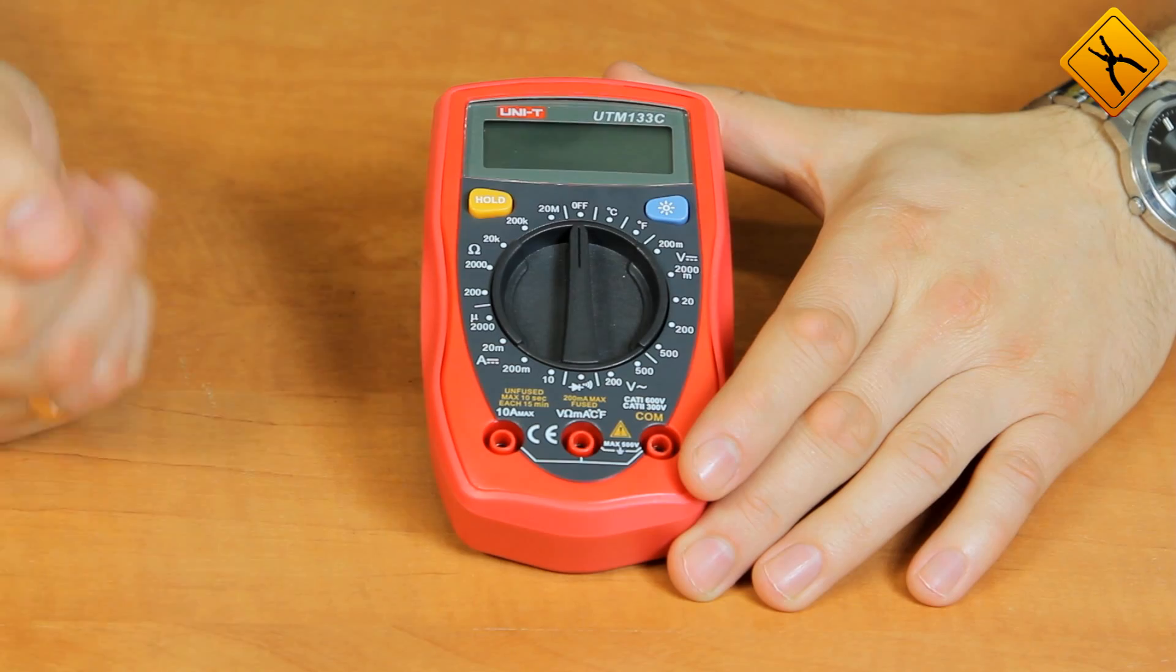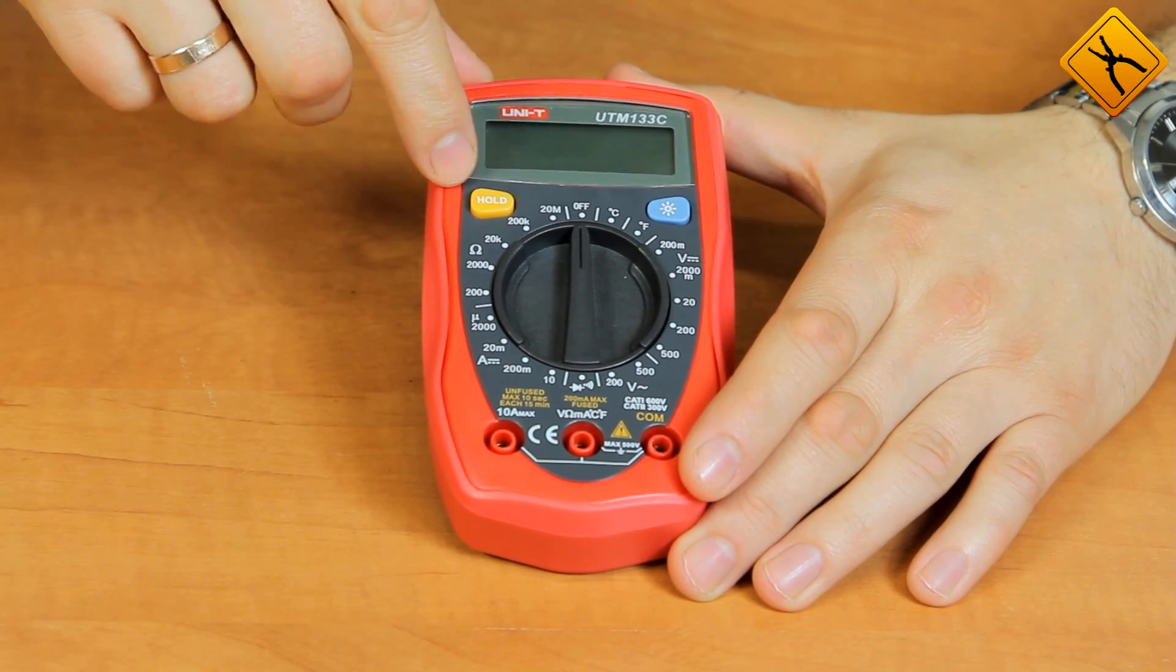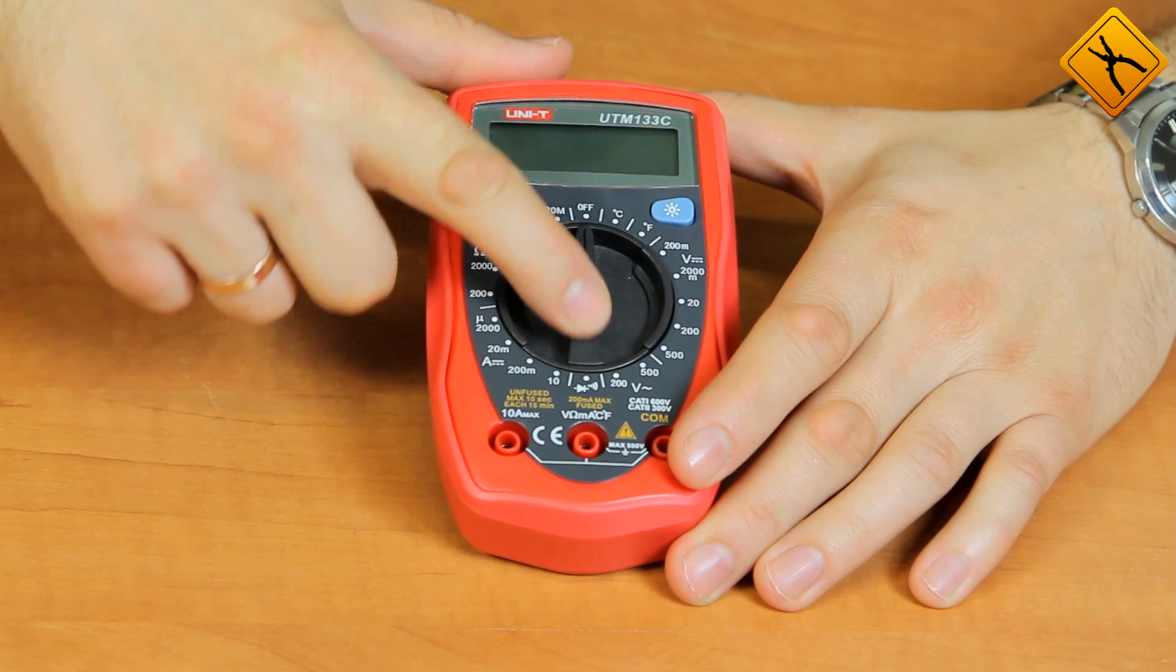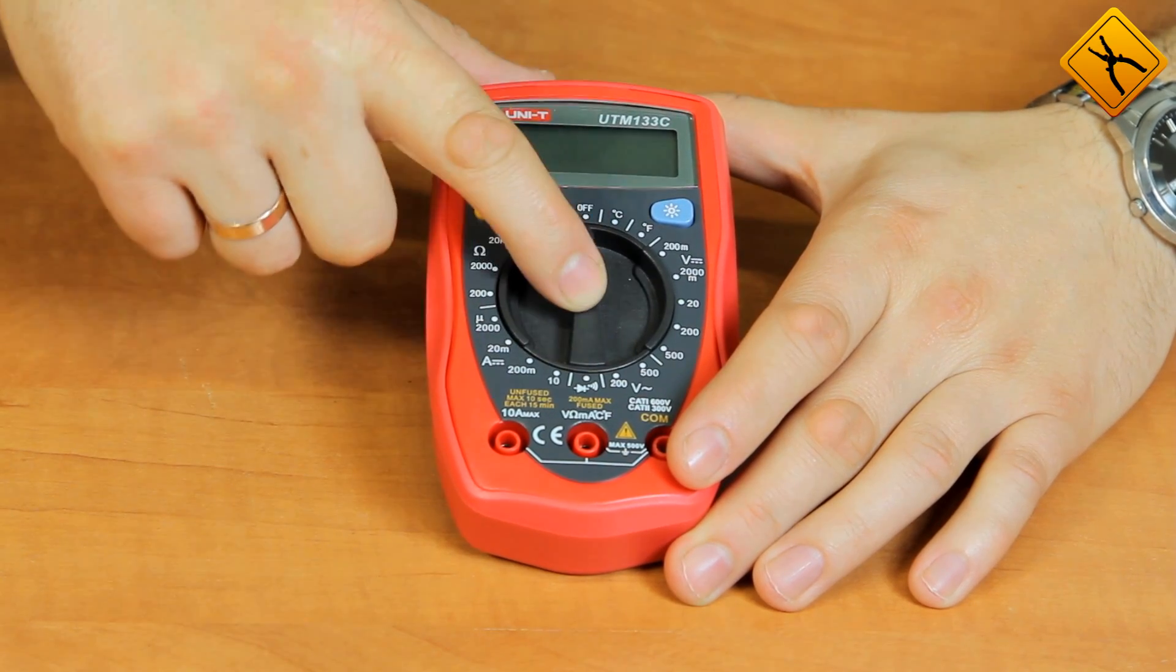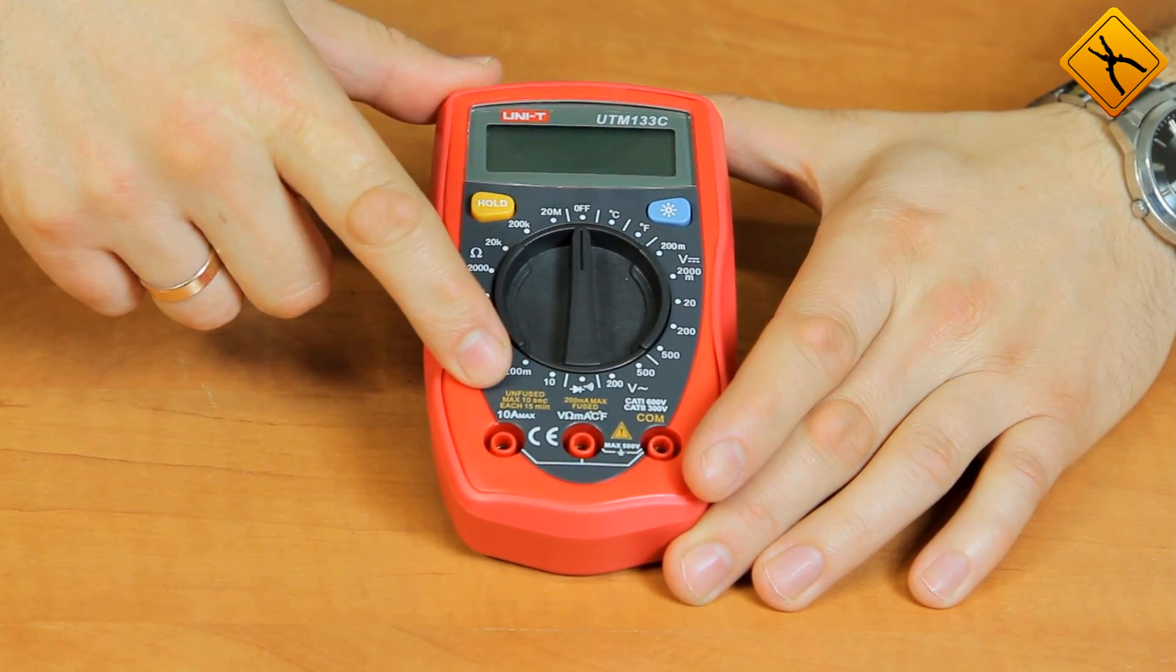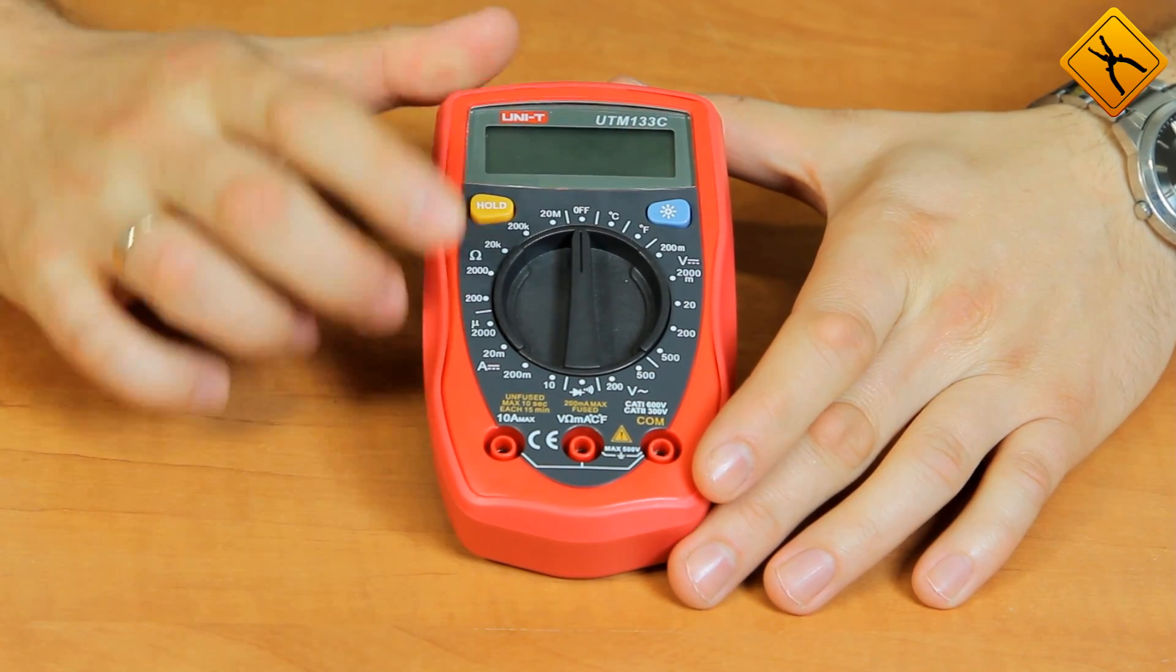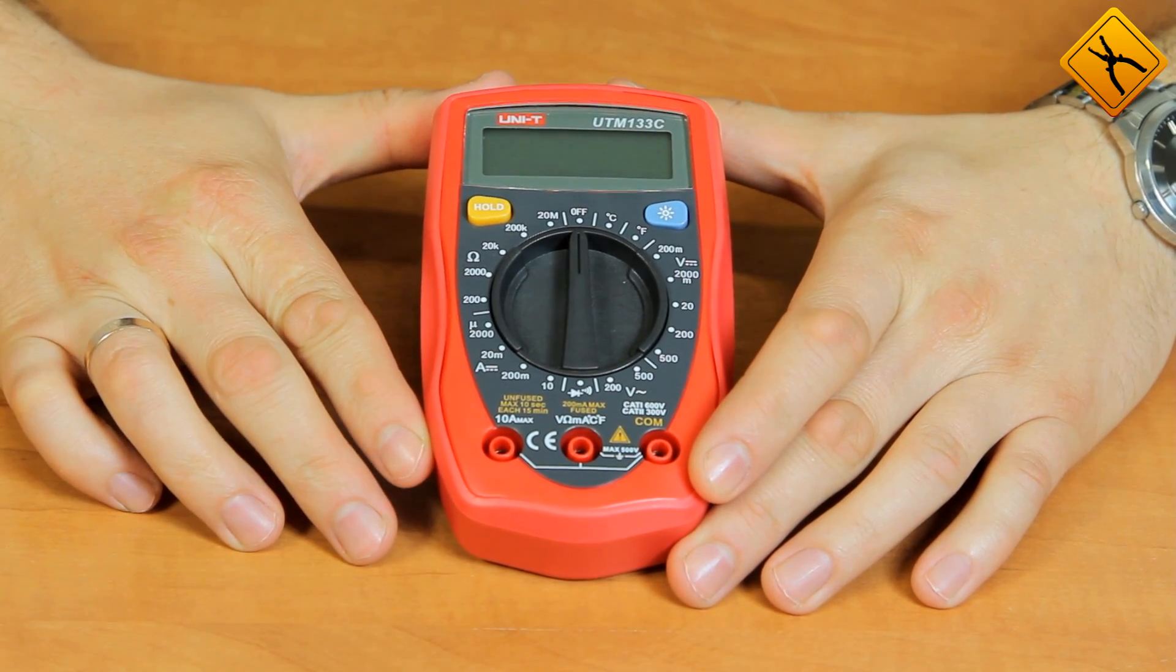Modern digital multimeter consists of the following parts: an information display, a rotary switch for range and measurement function selection, measuring probe connection terminals, and buttons for additional functions.